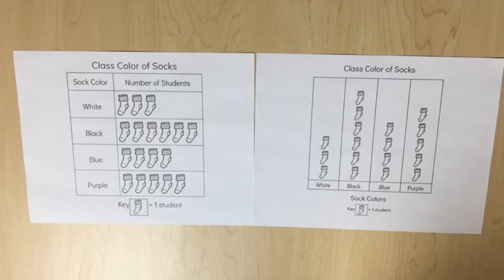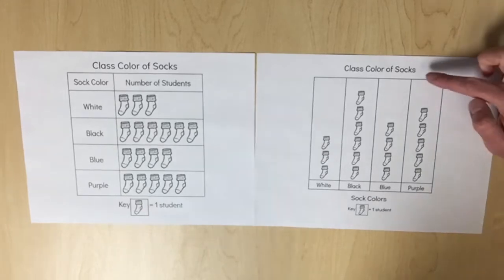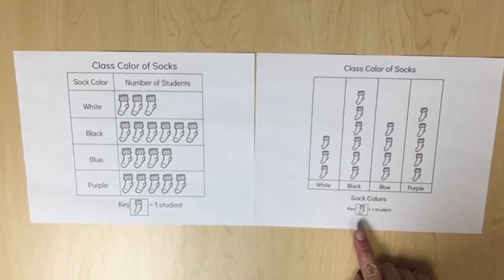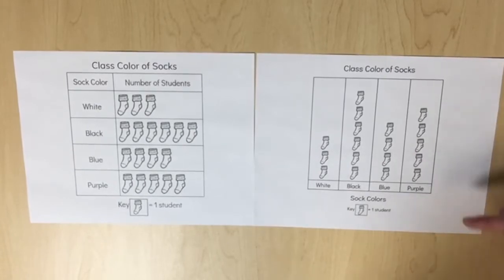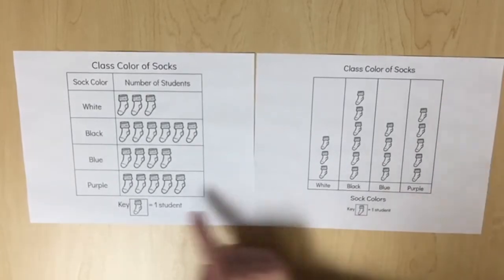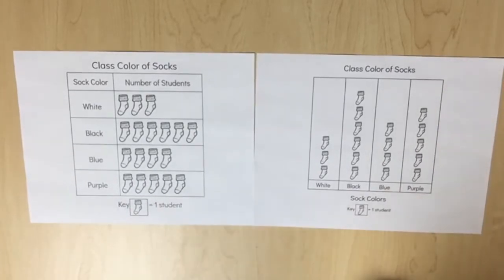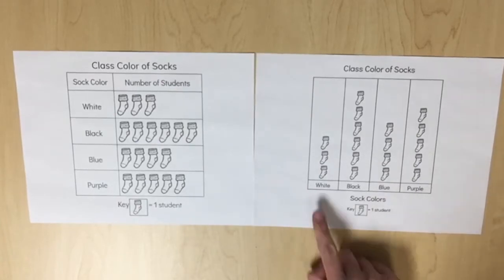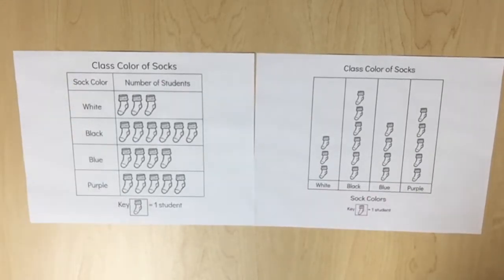For this section of the unit, the focus will be on pictographs. Characteristics of a pictograph include a title, a key that defines the value of each picture or symbol used, and a vertical or horizontal arrangement of pictures or symbols with labeled categories. Changes in orientation do not affect the data.